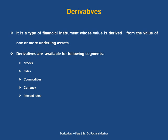Then we have index derivatives like Nifty, Bank Nifty, Nifty FMCG, and Nifty Pharma. Then we have commodity derivatives where we trade in commodities like gold, silver, and crude oil. Then currency derivatives are available on four currency pairs in India: US Dollar, Euro, Great Britain Pound, and Japanese Yen. And lastly, the interest rate derivative.